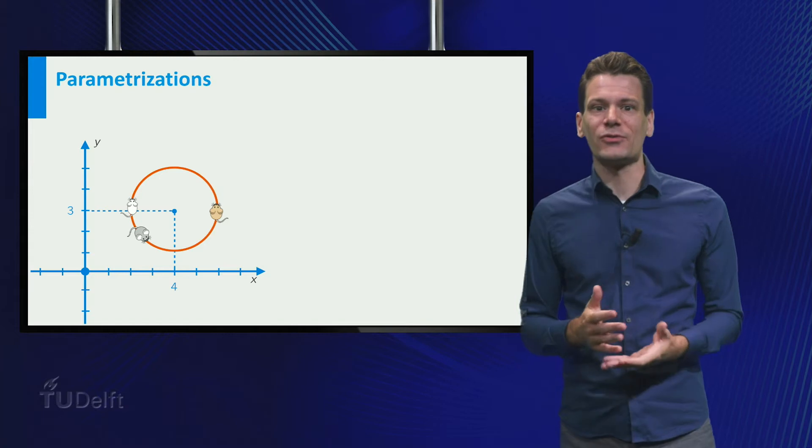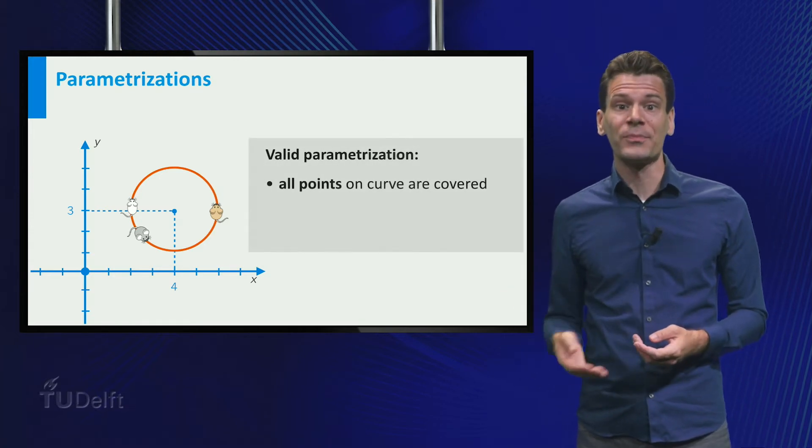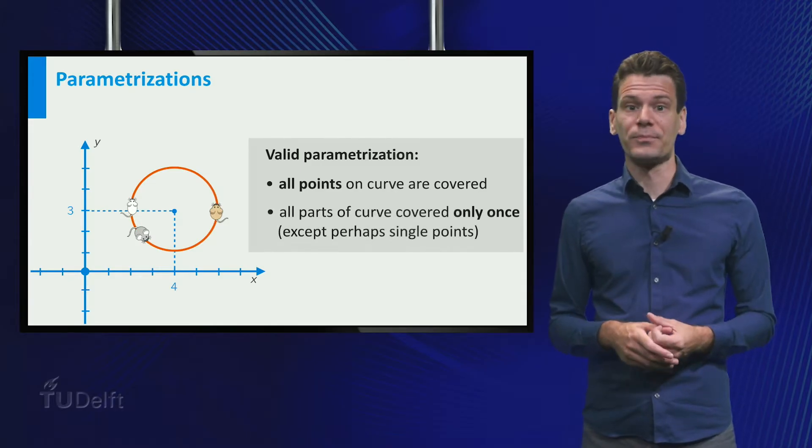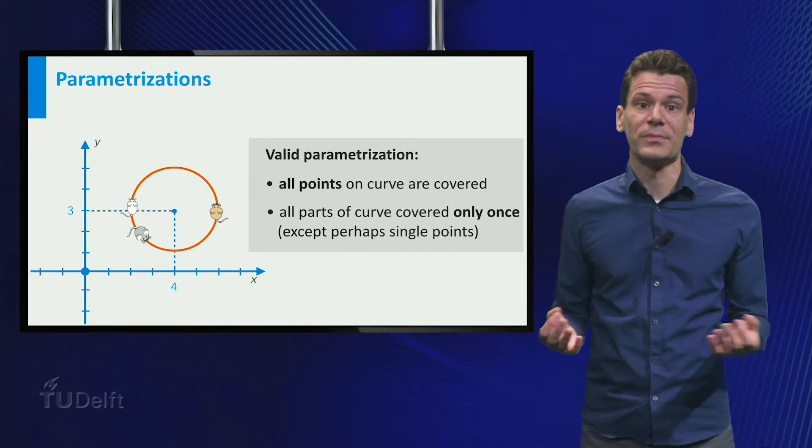In fact, a valid parametrization should have the following properties: it should cover the entire curve, but it should also cover each part of the curve not more than once, with the possible exception of single points, like the start and end point, in the case of the circle.